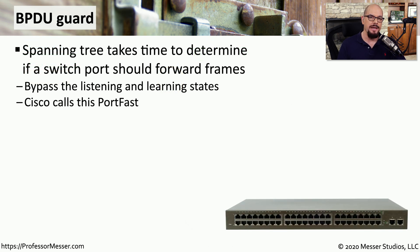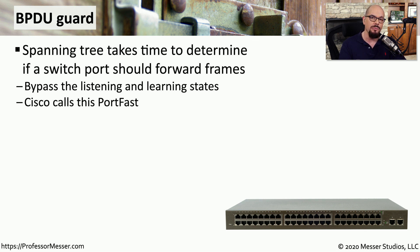One challenge with initial Spanning Tree implementations is that when you first connect to the network, it may take 20 to 30 seconds before Spanning Tree determines the correct path. Since we're plugging in a single device, there should never be a loop, but Spanning Tree doesn't know that and performs the same checks every time. To avoid this delay for individual end-station devices, we can configure the switch with a feature called PortFast on Cisco switches, allowing the device to instantly start communicating.